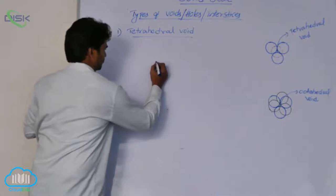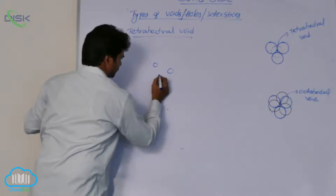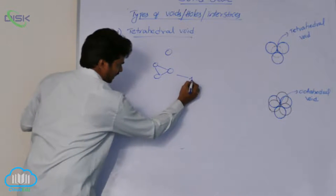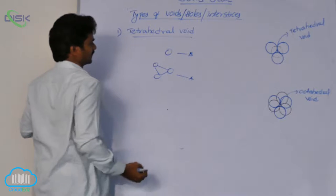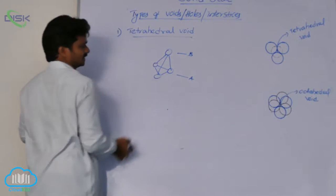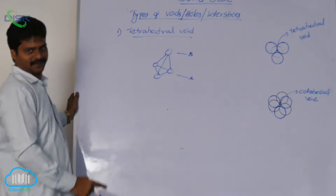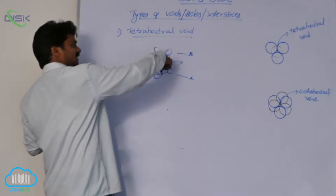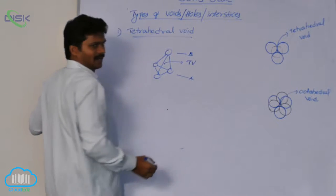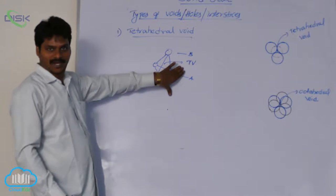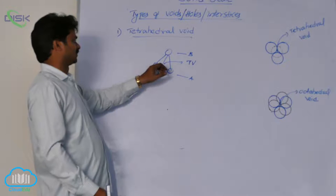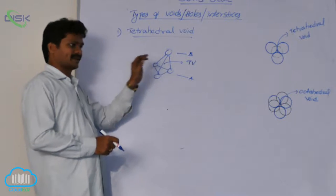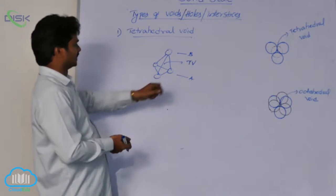This is an open-type structure of the tetrahedral void. The spheres from layer A and the sphere from layer B, when joined together, form a tetrahedron. Inside this tetrahedron there is an empty space — that empty space inside these four spheres is called the tetrahedral void. This tetrahedral void has its four corners occupied by four spheres, and is surrounded by four spheres at the tetrahedron corners. That is why it is named so.